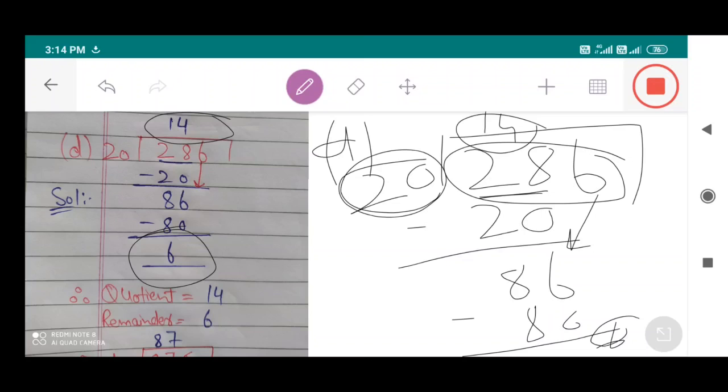Therefore the quotient is 14 and the remainder is 6. When I divide 286 by 20, my quotient is 14 and my remainder is 6. Thanks students.